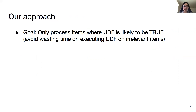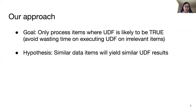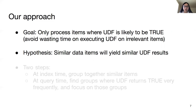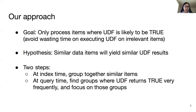To achieve this goal, we make an important hypothesis: similar data items will yield similar UDF results. The optimization is then achieved in two steps. At index time, group together similar items. At query time, find groups where the UDF returns true very frequently and focus on those groups.